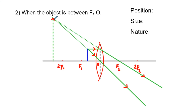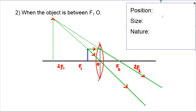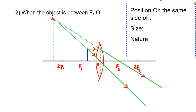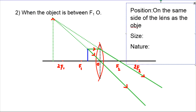The image is on the same side of the lens as the object. The image is enlarged. It is a virtual image on the same side as the object.